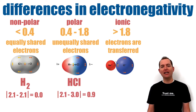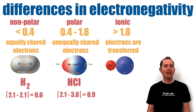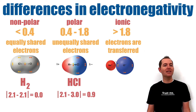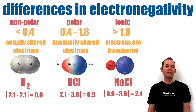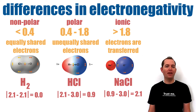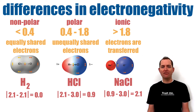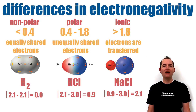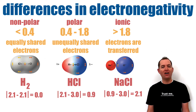Hydrogen and chlorine have an electronegativity difference of 0.9, which means they form a polar covalent bond due to unequal sharing of electrons. Sodium and chlorine have an electronegativity difference of 2.1, and because of this large difference, an electron is transferred and an ionic bond is formed.